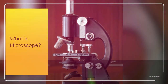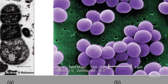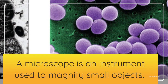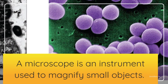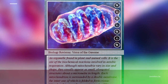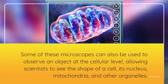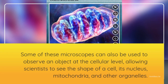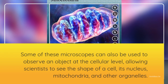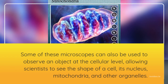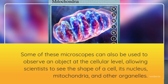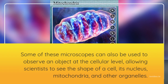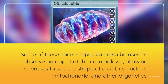What is Microscope? A microscope is an instrument used to magnify small objects. Some of these microscopes can also be used to observe an object at the cellular level, allowing scientists to see the shape of a cell, its nucleus, mitochondria, and other organelles.